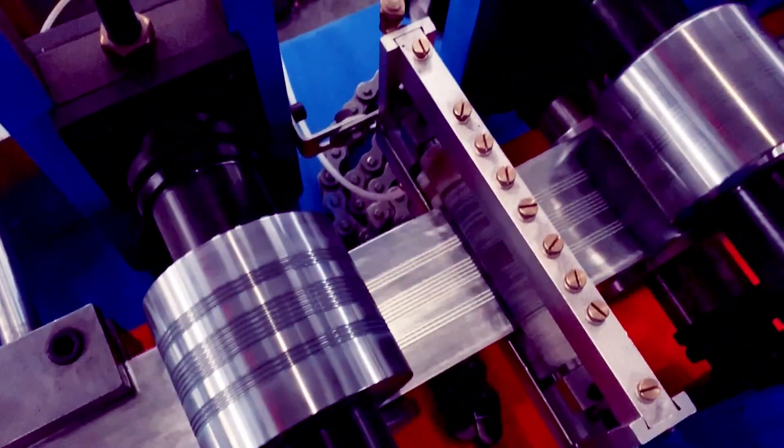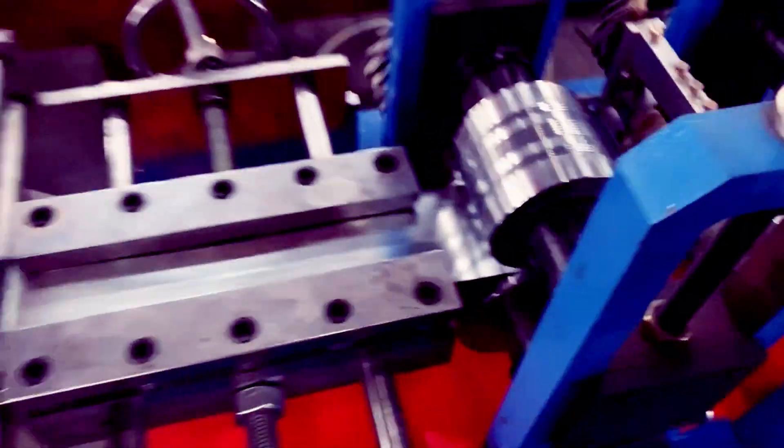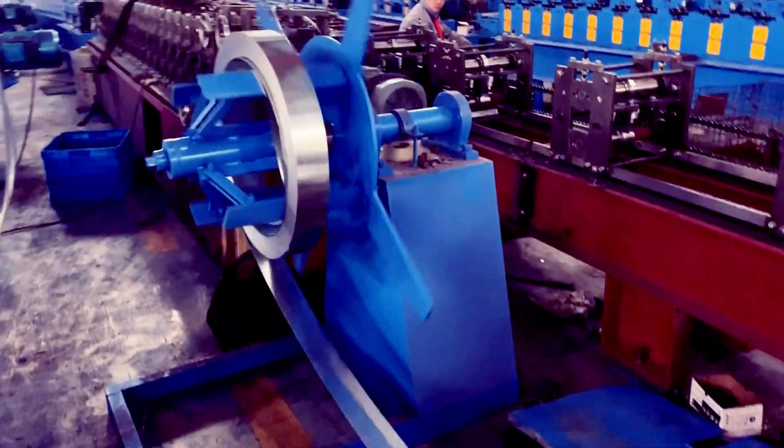The advantages of the high speed stud and track machine are as follows. 1. The speed can reach 40-50 meters per minute.